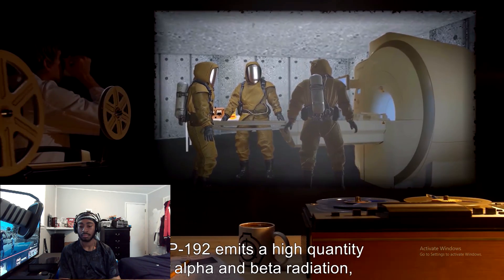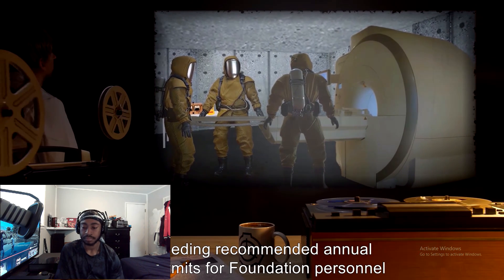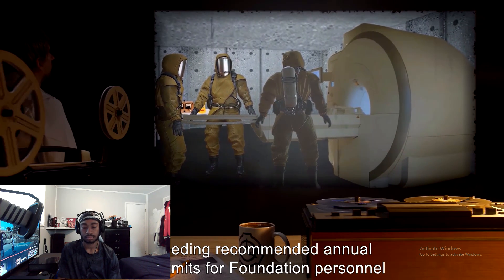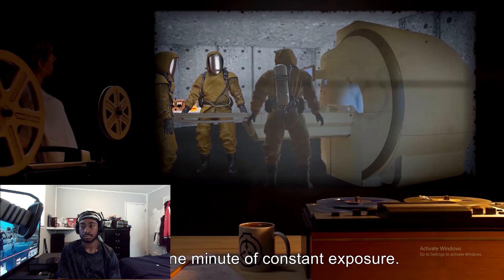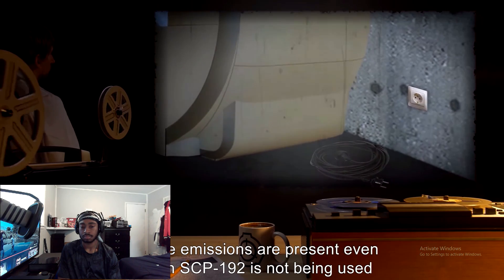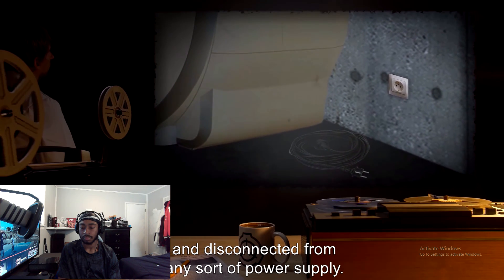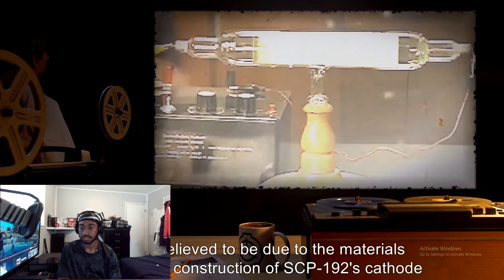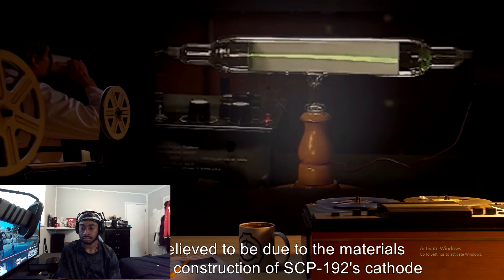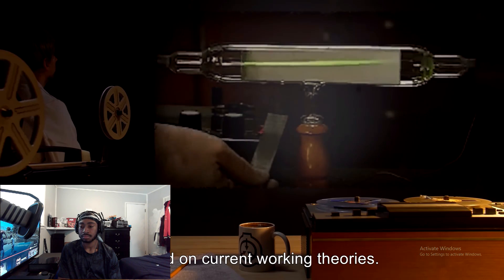SCP-192 emits a high quantity of alpha and beta radiation, exceeding recommended annual dose limits for Foundation personnel within one minute of constant exposure. These emissions are present even when SCP-192 is not being used and disconnected from any sort of power supply. This is believed to be due to the materials used in the construction of SCP-192's cathode, based on current working theories.